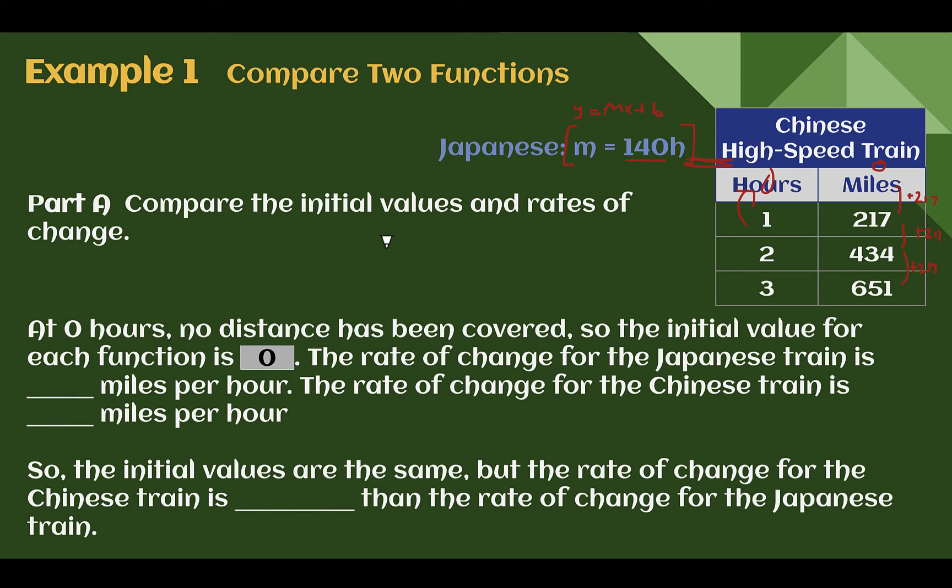Within the function, we can see our rate of change for the Japanese train is 140. There's your slope or rate of change. And for the Chinese train, it is going up 217 miles each hour, so there's your rate of change. So if we were comparing this function, we could say that the initial values are the same, but the rate of change for the Chinese train is greater than the Japanese rate of change.